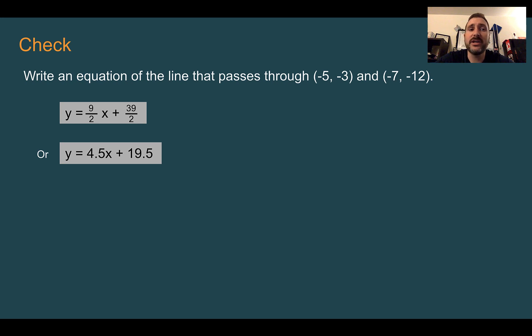So first you would have to find your slope. If we're subtracting negative 12 minus 3, we get negative 9. And then if we subtract negative 7 minus negative 5, we get negative 2. A negative divided by a negative is what makes this positive. Then when we plug that in along with one of our points, we get 39/2 as our b value or 19.5.